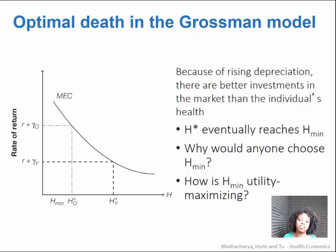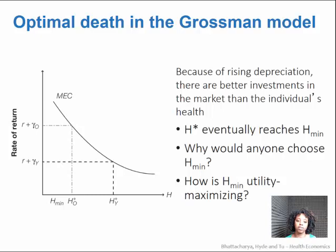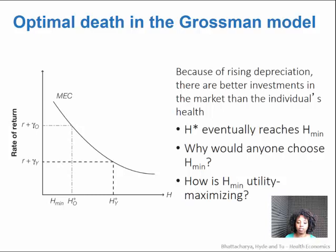There is even an optimal level of death in the Grossman model. Because your depreciation is increasing, at a certain point there's a better place to invest in the market than in your own individual health. So H star gets smaller and smaller until eventually it reaches H minimum. Why would anybody choose H minimum? Perhaps they're just really, really sick. So how could H minimum be utility maximizing? Think about that.